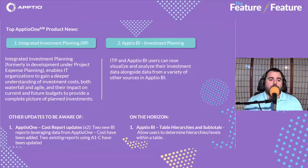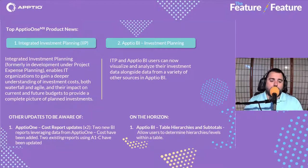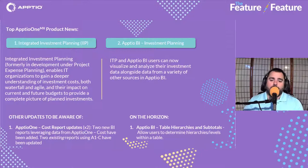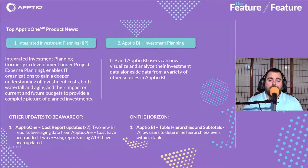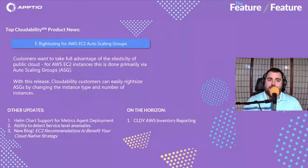Aptio BI is our suite that's connecting reports across all of the Aptio products. There are two other report updates inside of Aptio BI, basically updating the way the costs are shown, and existing reports within Aptio BI have also been updated in terms of how they connect to Aptio One. On the horizon, table hierarchies and subtotals are going to allow users to determine hierarchies and levels within tables in Aptio BI.